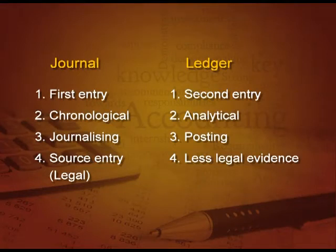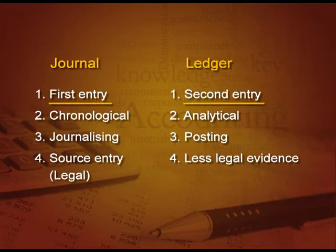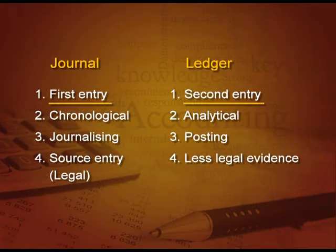Now let us understand the difference between journal and ledger. In journal, we record the entry for the first time, and after that we record it in the ledger. So we can say, in ledger it is the second entry, in journal it is the first entry. In journal, we record in chronological order, that is date-wise order, but in the case of ledger, we record in an analytical manner — all the entries relating to a particular person are recorded at one place, like Ram's entries are recorded in Ram's account, Sham's entries are recorded in Sham's account.